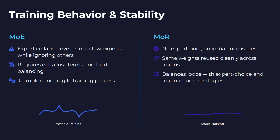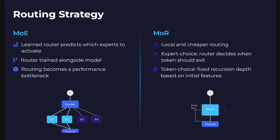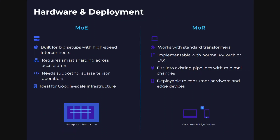MoR balances loops with expert-choice and token-choice strategies, making it a more stable routing approach. In MoE, a router is trained alongside the model, and routing becomes a performance bottleneck. In MoR, routing is local and cheaper. The two choices — expert choice and token choice — are mostly rule-based, so you are not training any additional model. In short, MoE requires training a routing model, while MoR uses a rule-based solution.